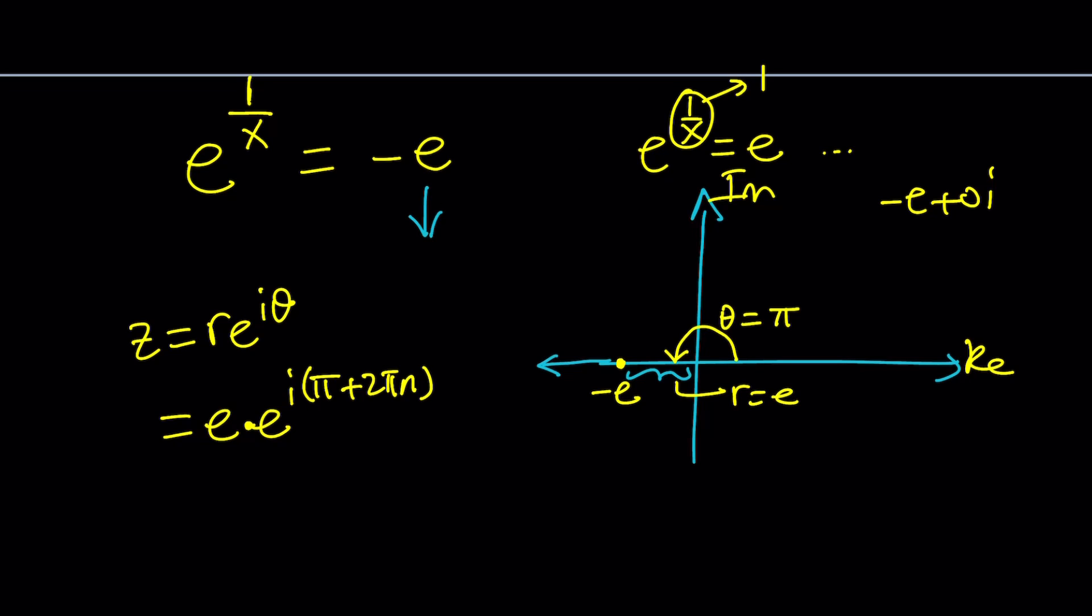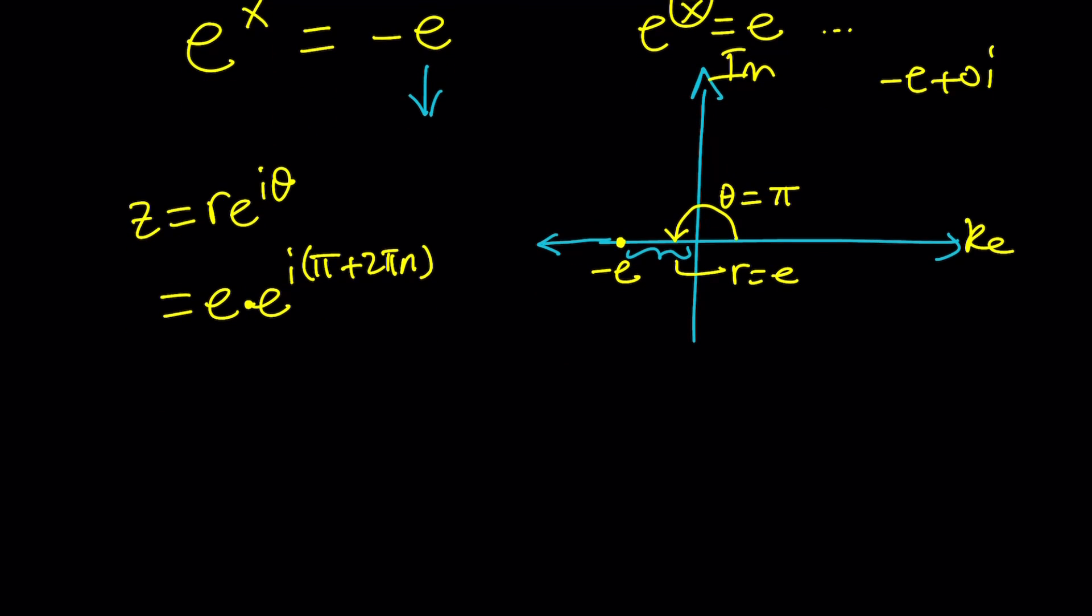Now this is our number. It's equal to e to the power of 1 over x. So let's go ahead and set it equal to that. And notice that this is e to the first power. So I can kind of add the exponents and get 1 plus i times pi plus 2 pi n.